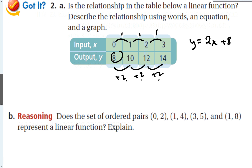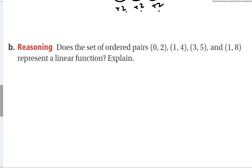For part B, do these ordered pairs represent a linear function? Looking at the data, I can see that one x-value repeats itself and gives two different outputs. This is not a linear function — in fact, it is not a function at all.